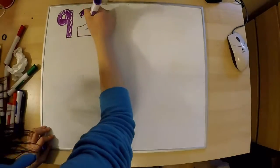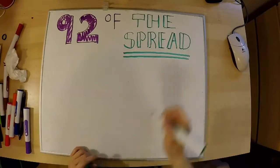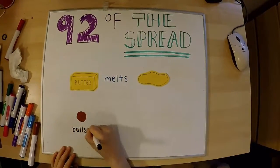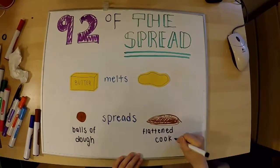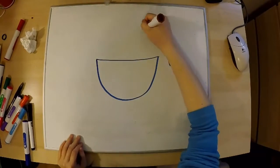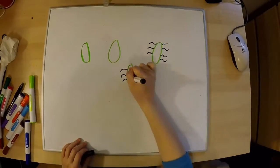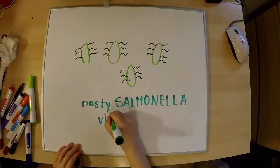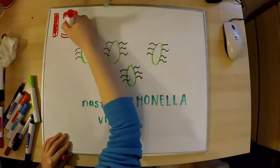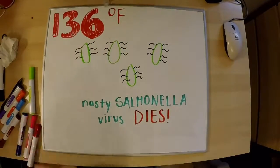So what happens in the oven? At 82 degrees Fahrenheit, spread happens — the butter melts into a puddle and the ball of dough becomes a flattened cookie. Have you ever wanted to eat the brownie or cookie batter from the bowl but someone told you not to? That's because they wanted to protect you from the possible salmonella that could be hiding within the raw eggs. But at 136 degrees Fahrenheit, they all die, so you can eat the batter.